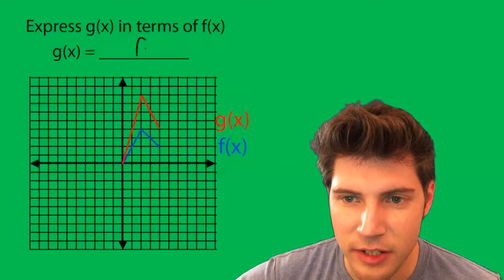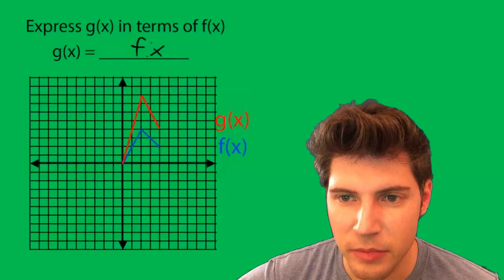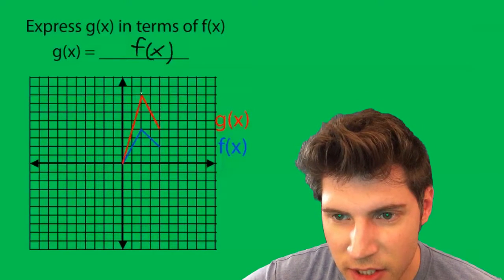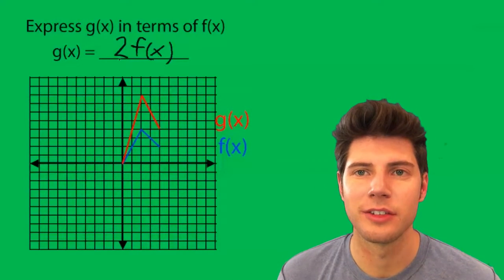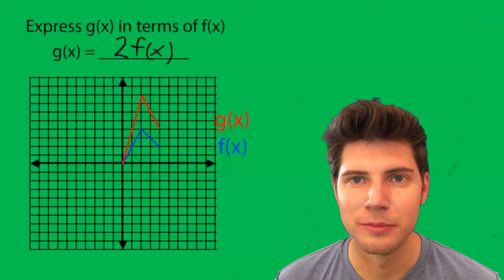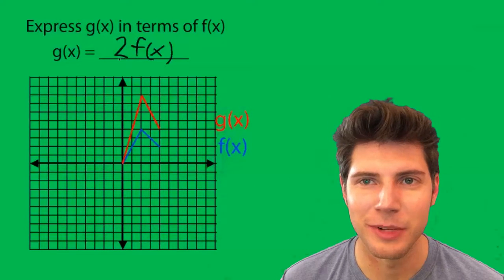So we're going to say it's f of x and we're going to put something on the outside here. Since each of the points is twice as tall, it's going to be 2 f of x, and that's the answer to the whole problem. Hope that made sense. Talk to you guys soon. Bye.